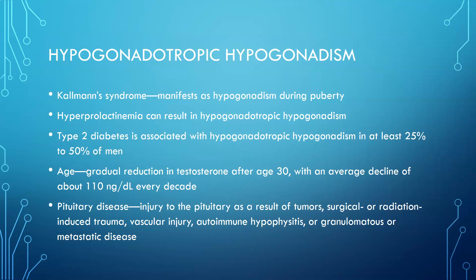Type 2 diabetes is associated with hypogonadotropic hypogonadism in at least 25% to 50% of men with type 2 diabetes. With age, there's a gradual reduction in testosterone after the age of 30, with an average decline of about 110 nanograms per deciliter every decade, so testosterone production is supposed to decline over the years as a person ages.